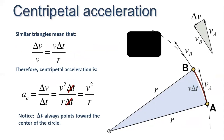d = v·Δt, and the change of velocity is Δv. Using similar triangles: Δv/v = v·Δt/r. Putting this into the acceleration equation, we get a = v²/r. Here Δv always points towards the center of the circle.